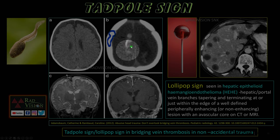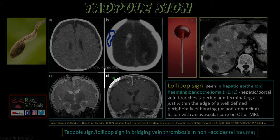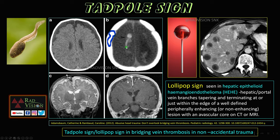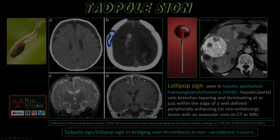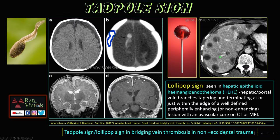Next, the tadpole sign is typically seen in bridging vein thrombosis, where the bridging vein mimics a tadpole — this is the head and this is the tail of the tadpole. Whenever you see extra-axial collections with a tadpole-like appearance in bridging vein thrombosis, definitely suspect non-accidental trauma. Remember also the lollipop sign in hepatic epithelioid hemangioendothelioma, where hepatic or portal vein branches are seen terminating at the edge of the lesion.